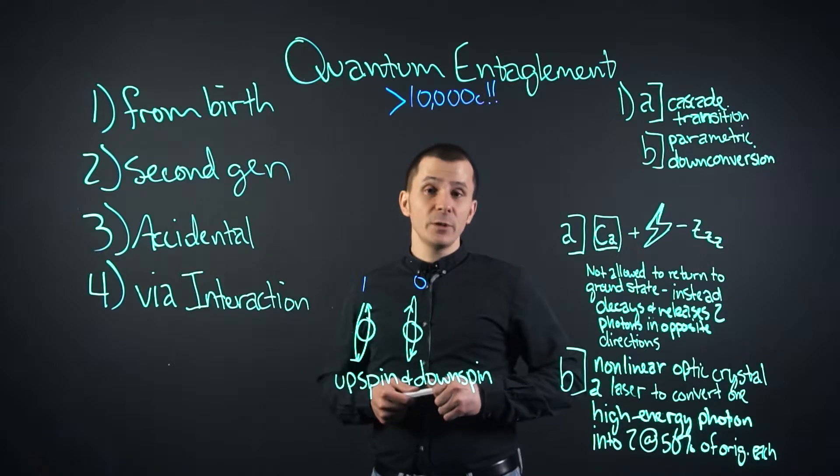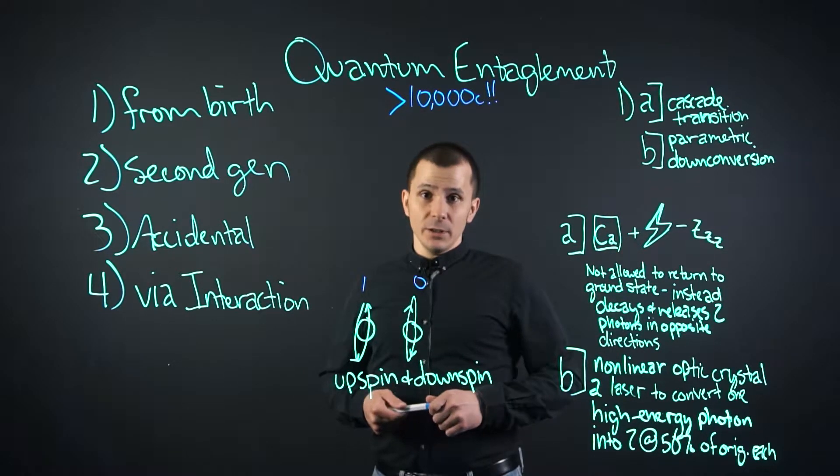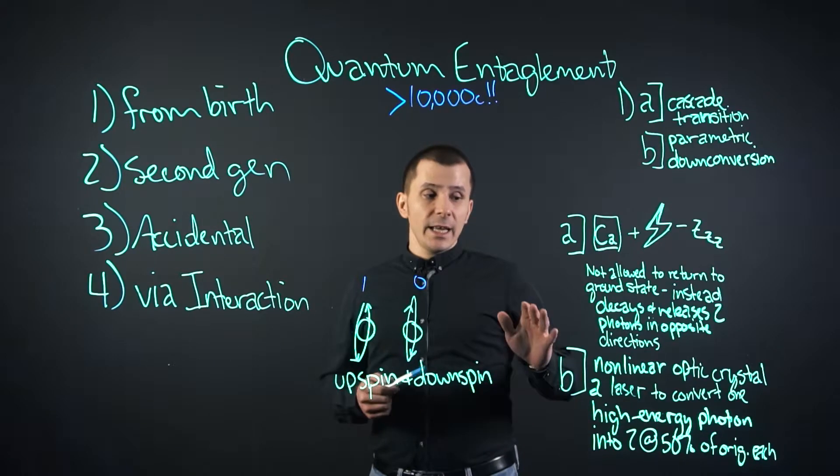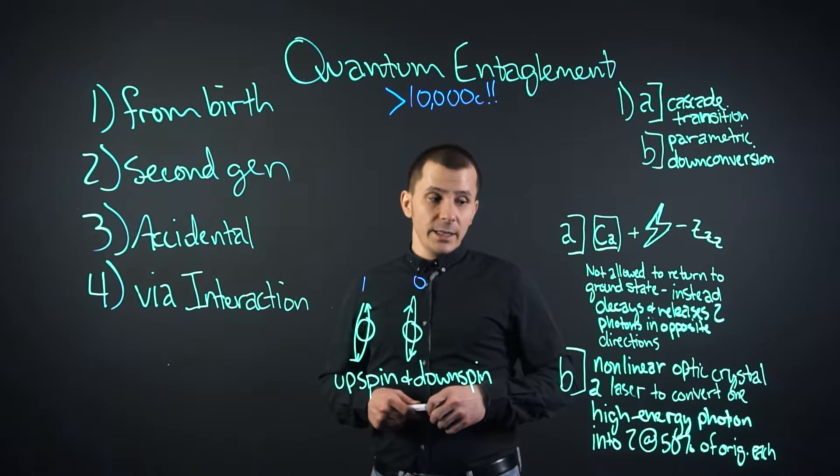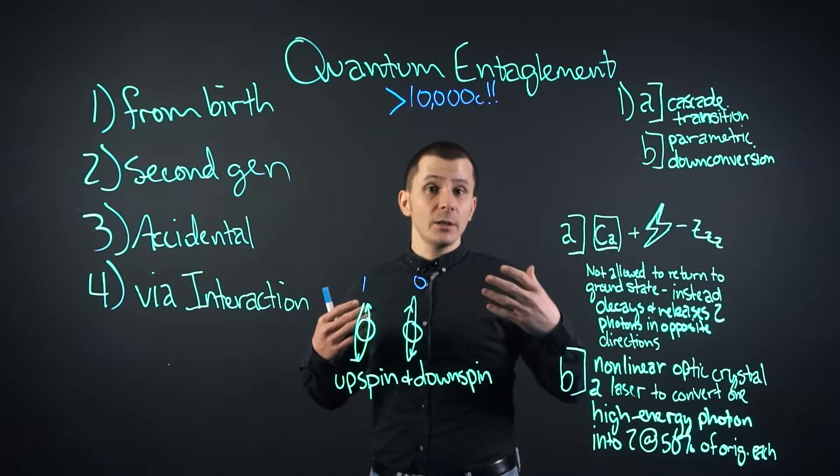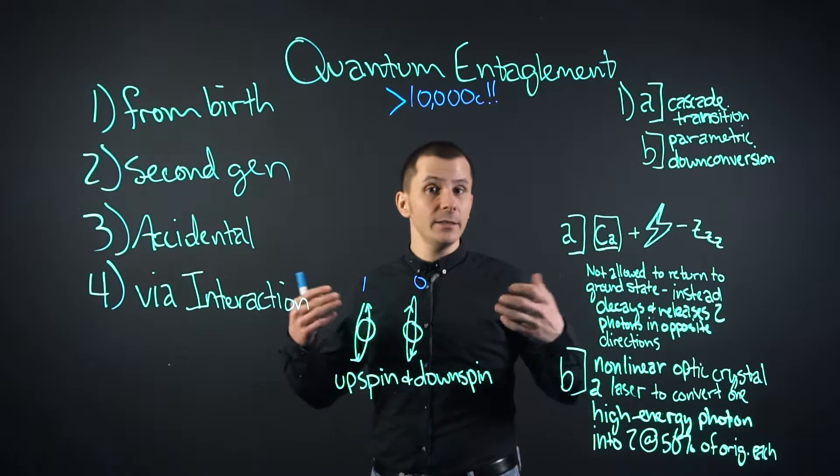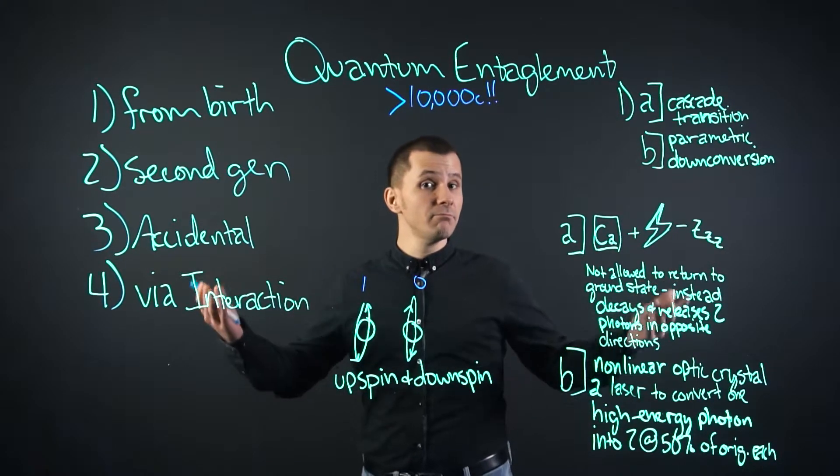A second method, developed later, is called parametric downconversion. It's quite interesting. Using a nonlinear optical crystal and a laser, you convert one high-energy photon into two, and each of the resulting photons has 50% the energy of the first. These photons are then entangled.